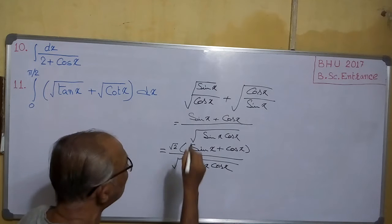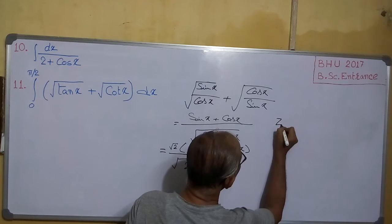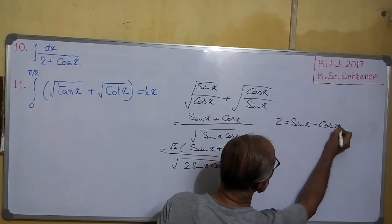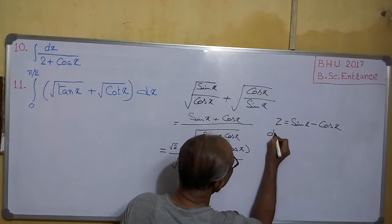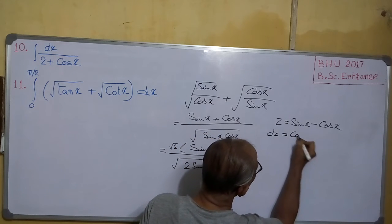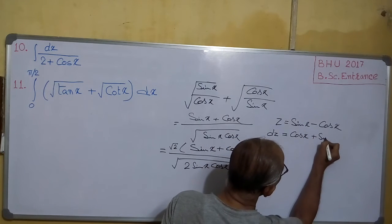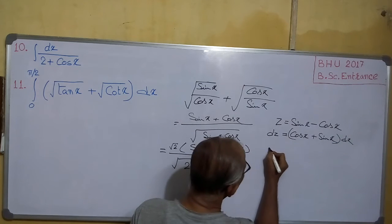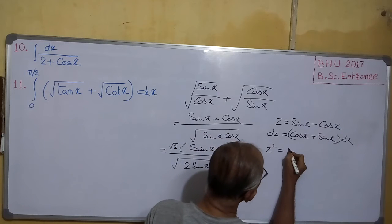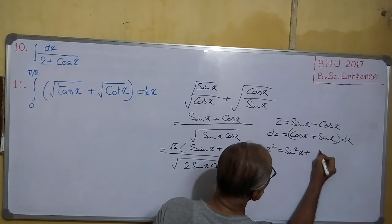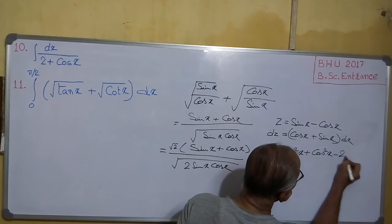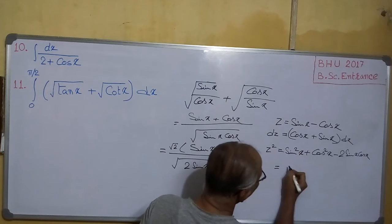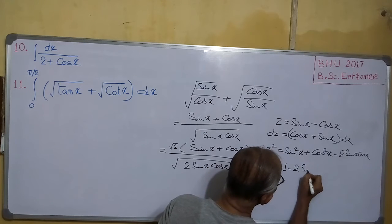See carefully what I am doing. Now if we assume z equals sinx minus cosx, this assumption is important to the sum. Then dz equals cosx + sinx dx. Again, z² equals (sinx - cosx)² = sin²x + cos²x - 2·sinx·cosx, which equals 1 minus 2·sinx·cosx.